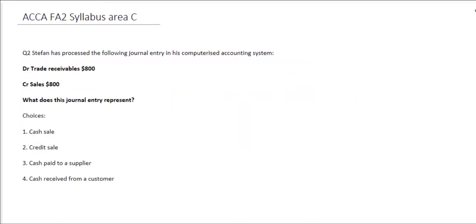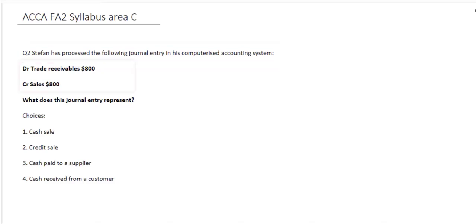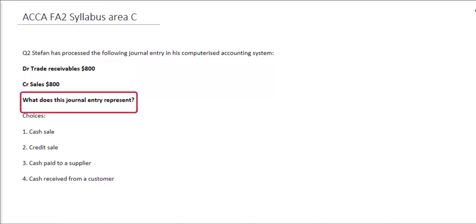For our next question relating to Syllabus Area C, it tells us that Stefan has processed the following journal entry in his computerized accounting system: a debit to Trade Receivables of $800 and a credit to Sales for $800. The requirement asks us what does this journal entry represent?